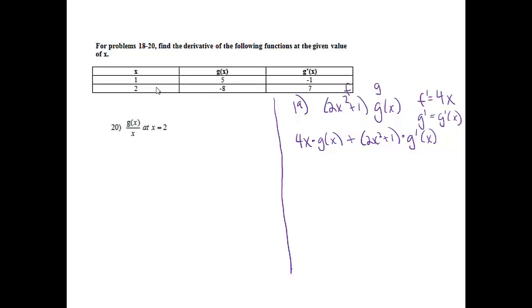Now, I know I'm finding it at x equals 2. So now we are going to, actually this one said x equals 1, sorry. So now wherever I see an x, I'm just going to put a 1. So 4 times 1 times g of 1 plus 2 times 1 squared plus 1 times g prime of 1.